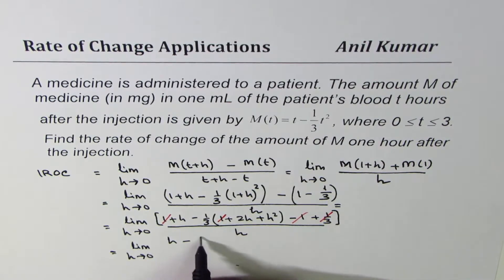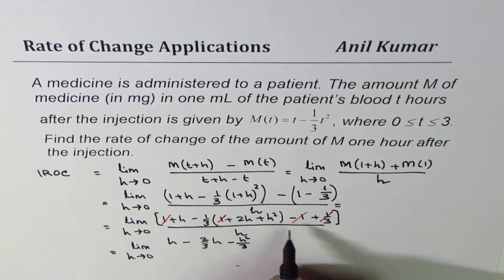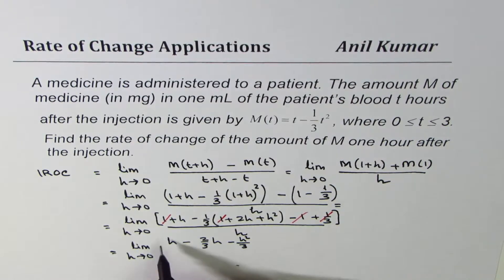Minus 2/3·h, right? I'm just opening this bracket: 2/3·h - h²/3. Correct. So these are the three terms divided by h. I can write this as times 1/h, is that okay?